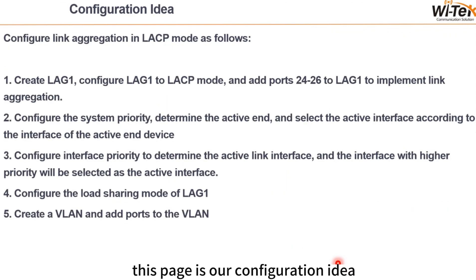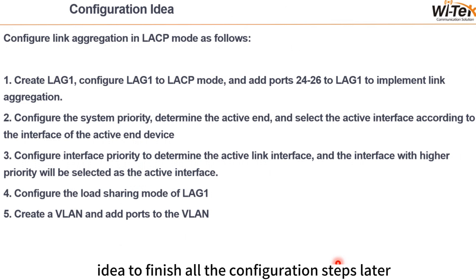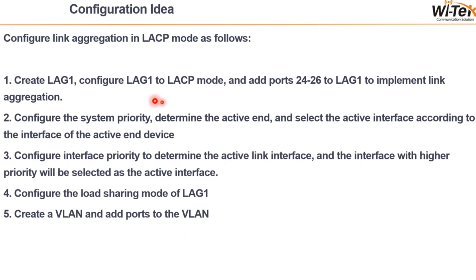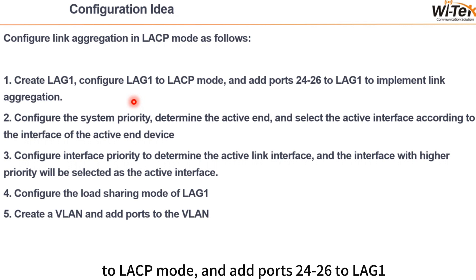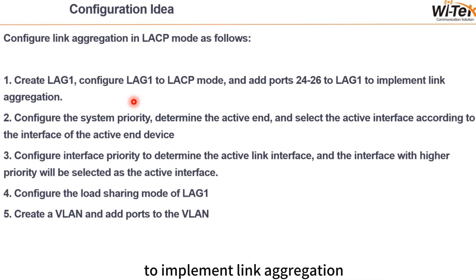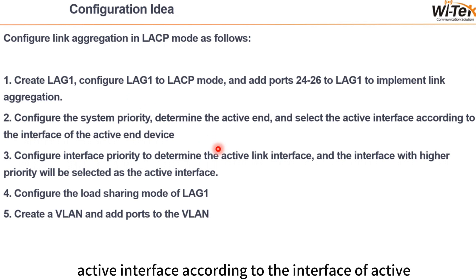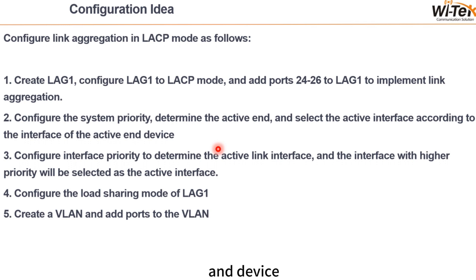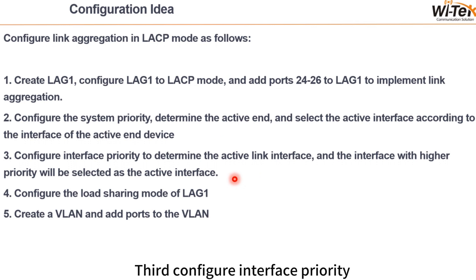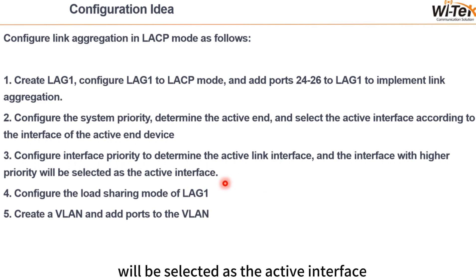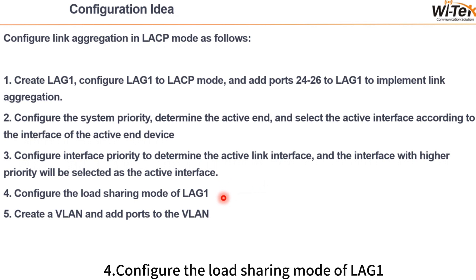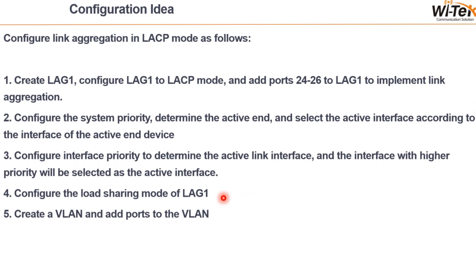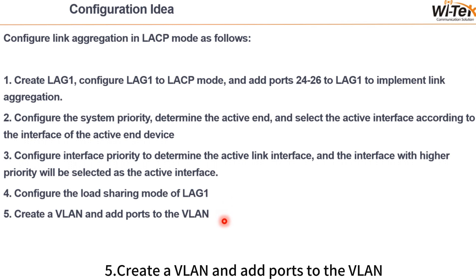This page is our configuration idea, so we will follow this idea to finish all the configuration steps. First, create LAG1, configure LAG1 to LACP mode and add ports 24-26 to LAG1 to implement link aggregation. Second, configure the system priority to determine the active interface according to the interface of the active-end device. Third, configure interface priority to determine the active link interface — the interface with higher priority will be selected as the active interface. Fourth, configure the load sharing mode of LAG1. Fifth, create a VLAN and add ports to the VLAN.